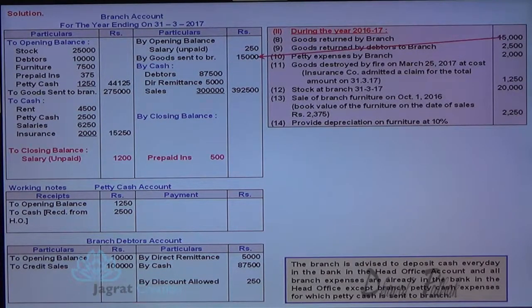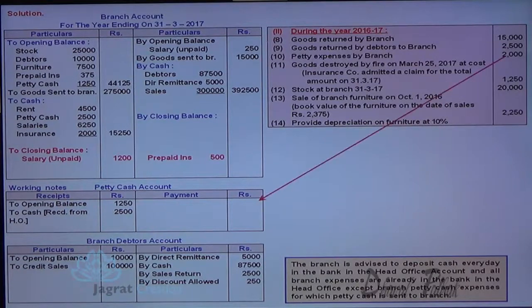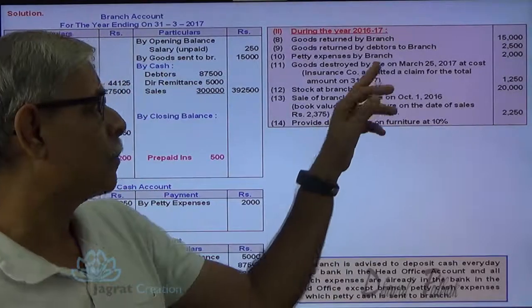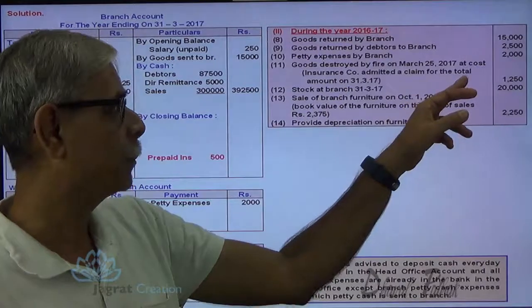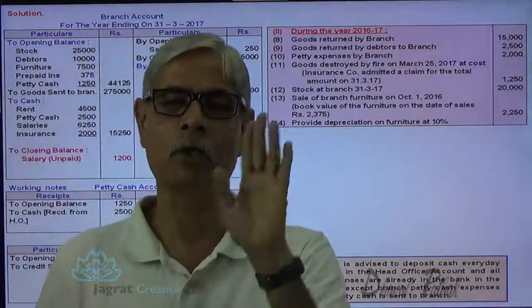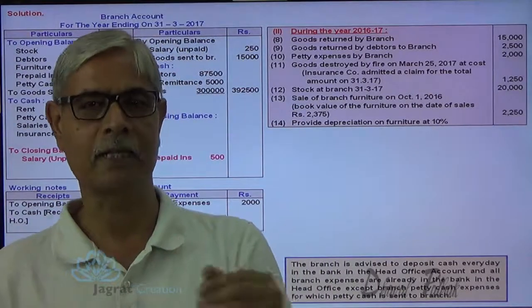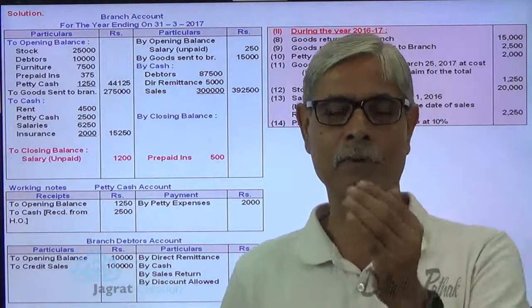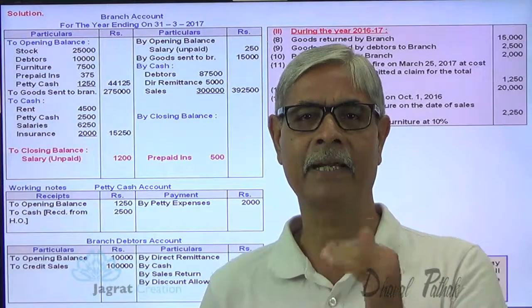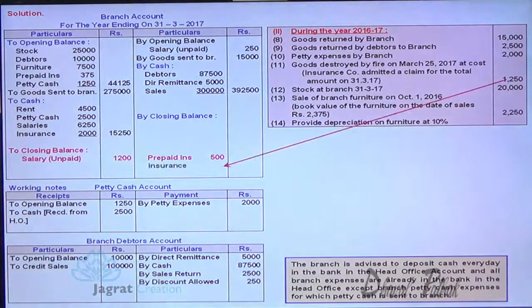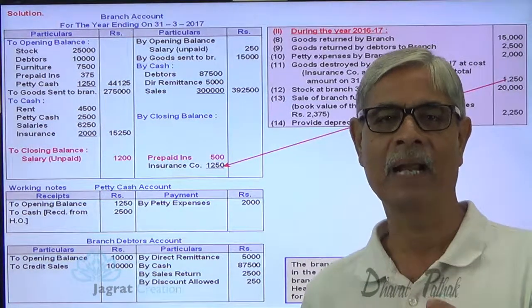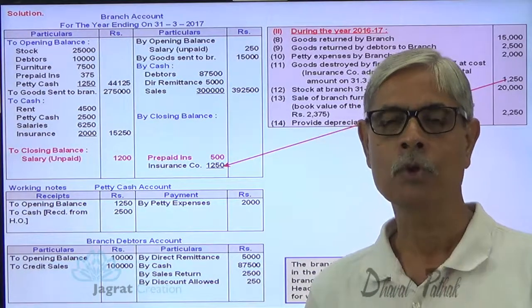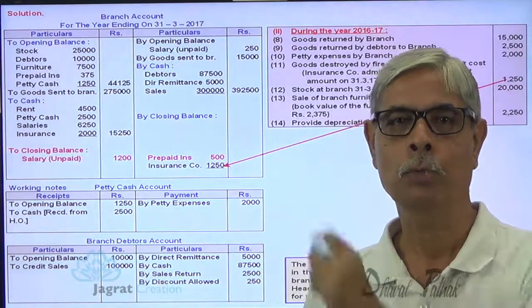Goods returned by branch — branch is the giver, credit the giver, so branch account is to be credited. Goods returned by customer — debtors account is to be credited for this sales return. Petty cash expenses by the branch will be recorded on the payment side of petty cash account. Goods destroyed by fire — very important point. Goods destroyed by fire on 25th March 2017 at cost. Insurance company admitted a claim for the total amount on 31st March. So 1250 is the claim for loss of stock. Whatever the cost of stock that is lost, the claim is admitted by the insurance company, so this amount is recoverable from the insurance company. At the end of the year, it is a right of the branch to receive money from the insurance company, so it is an asset. That asset is absorbed by head office in its books of accounts at the end of the year. So claim from insurance company will be recorded in the closing balance as a right to receive, transferred to HO. HO gets this right from branch, so it is an asset: amount due from insurance company account debit to branch account credit.